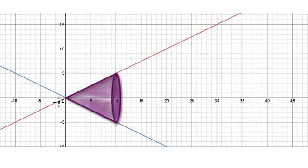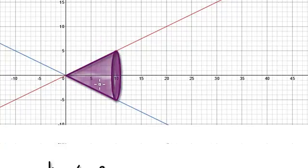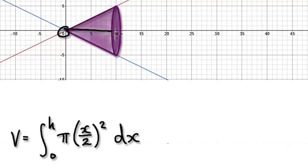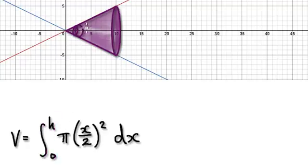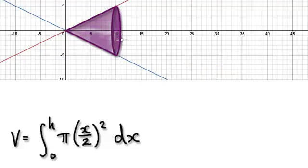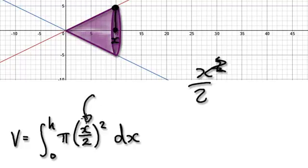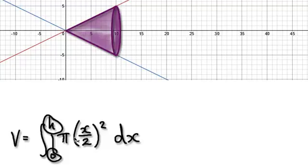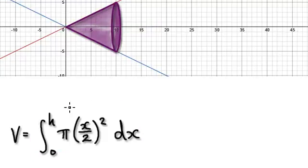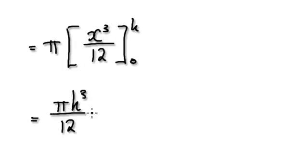And then in the case of this solid here, you're integrating from 0 to h, summing up all the circles. Pi r squared — the radius here would be x over 2. So you're summing up from 0 to h, pi r squared, and this volume here is given by this. Just follow it through, and it actually equals the same thing.